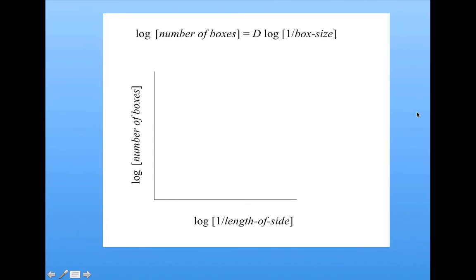So what we can do is we can take the measurements that we made at each level for the box counting, and we can plot each measurement on this graph. So here's some hypothetical measurements that we might have gotten, where the number of boxes goes down as the length of the side goes up. Notice this is 1 over the length of the side, so as the length of the side goes up, this goes down.